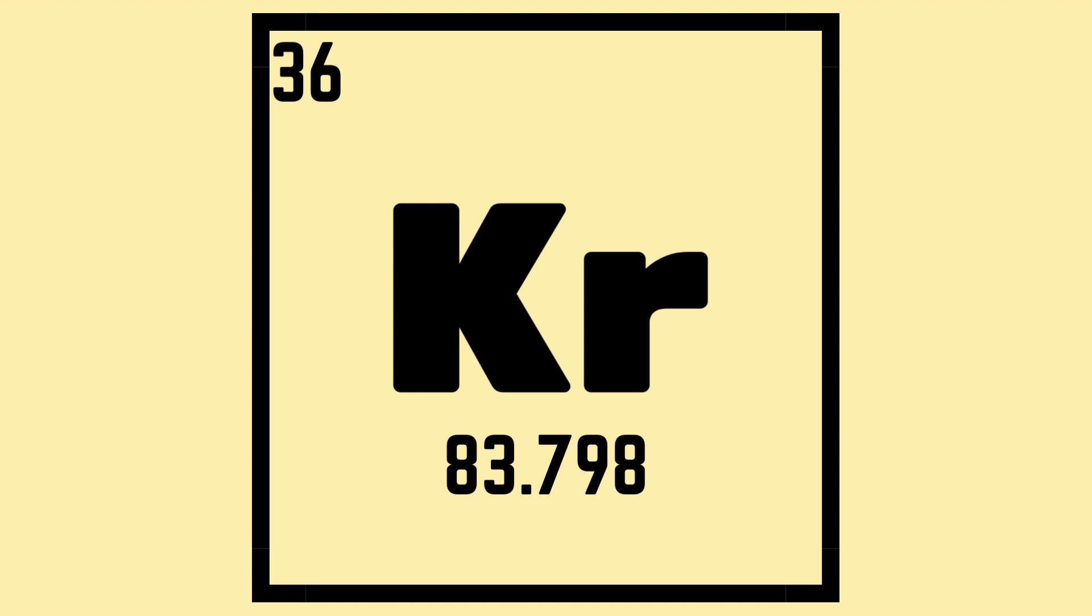Every element has a one or two letter symbol. For example, Kr is the symbol for the element krypton. Scientists use these symbols to write down the chemical formulas for molecules and chemical reactions.